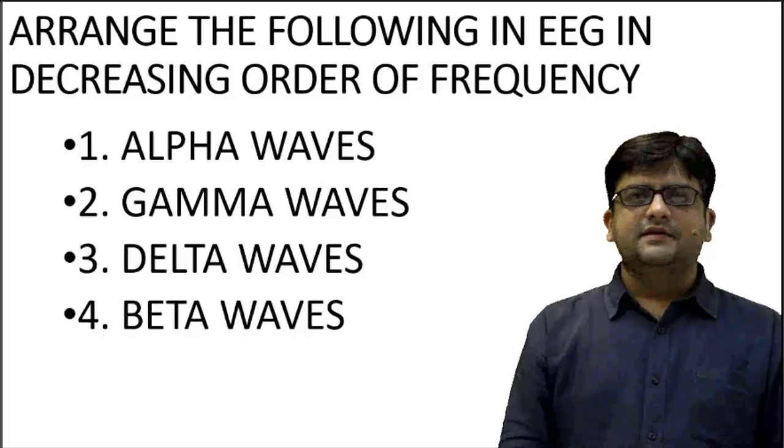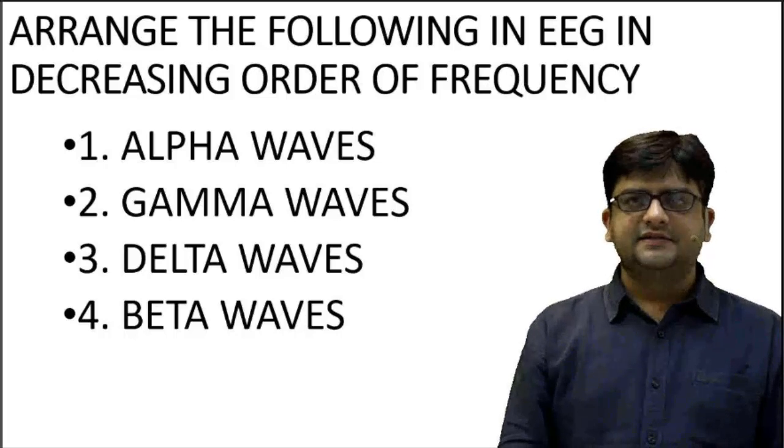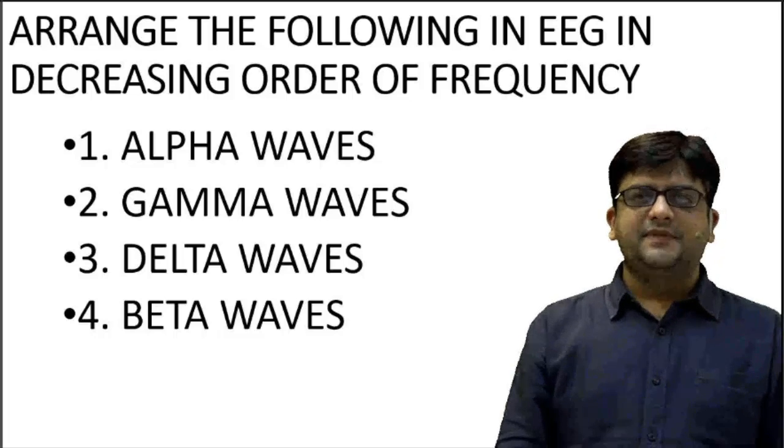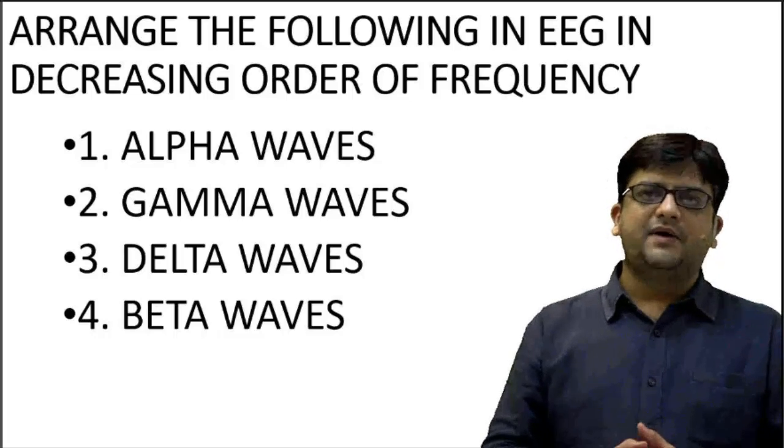Delta is 0.5 to 4 hertz. Theta is 4 to 8 hertz. But many people don't know about gamma. Gamma is 25 to 100 hertz, peak is 40 hertz, median usually 40 hertz. So gamma is the highest frequency wave.